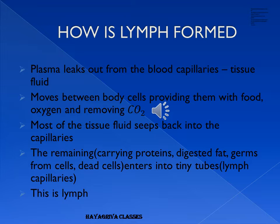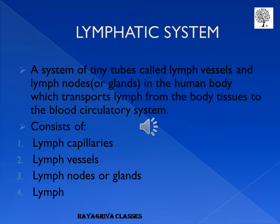This lymph, along with its contents, will be returned to the blood by another type of transport system in the human body — the lymphatic system. The lymphatic system consists of a system of tiny tubes called lymph vessels and certain glands called lymph nodes. These structures transport lymph from the body to the blood circulatory system.